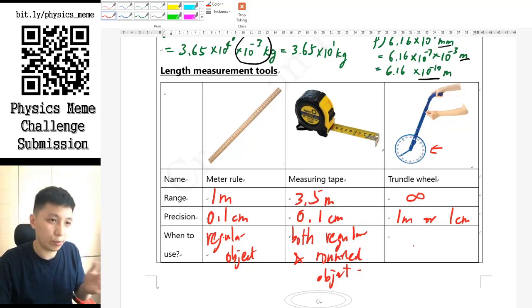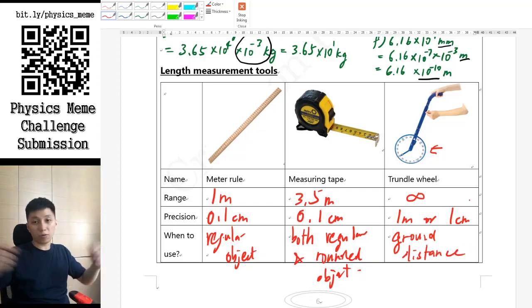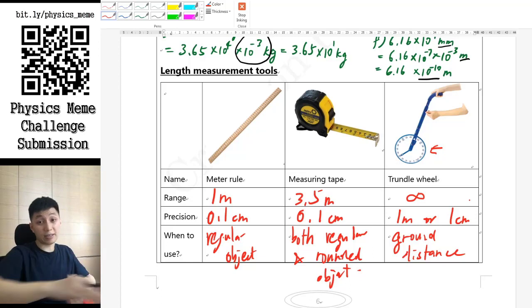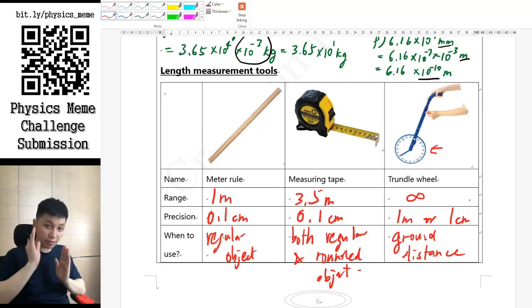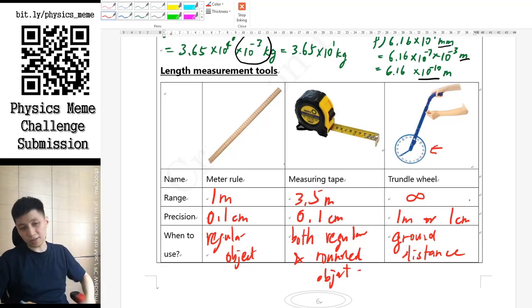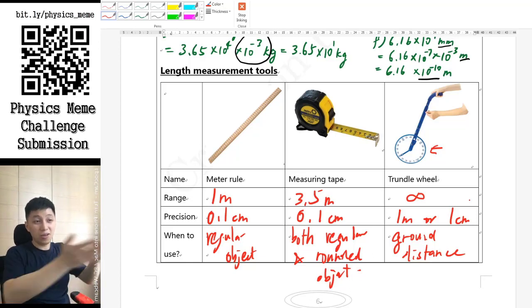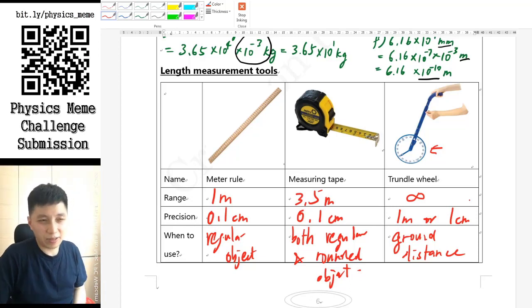Apparently, for the time when you will be using the trundle wheel is most likely for measuring the ground distance. All right, so for example, if you use a rocket or anything, you want to measure how far it's covered, or simply doing a speed of sound experiment. You want to find out the distance first, then yeah, this is the way you can measure the distance. No one will be using measuring tape—I mean, this is 3.5 meters—or even worse, a meter ruler. You go to flip the ruler a hundred times if you want to measure a hundred meters. Then that's not something that we should do practically, so trundle wheel will be used in this case.